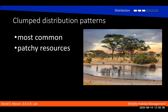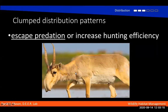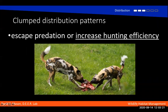The most common distribution pattern is clumped. We see that with patchy resources — here we have a picture of the African savanna at a watering hole, and of course a lot of animals are clumped around there, both individuals of the same species and different species. You can also see clumped distribution when individuals are unable to move, such as the Crested Caracara juveniles stuck in the nest. Think about other organisms that can't move, like a barnacle. We also see animals group up in herds to escape predation, or conversely to increase their hunting efficiency — these are African wild dogs.